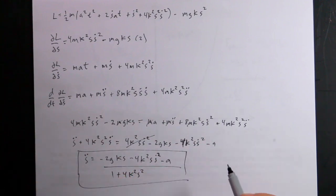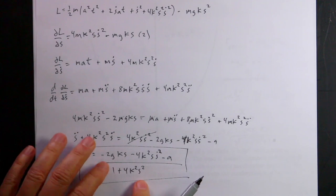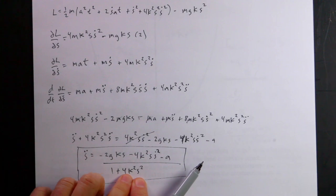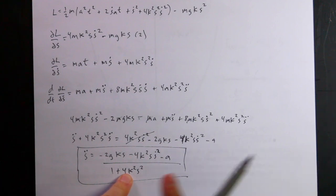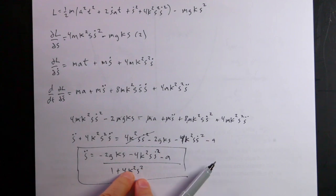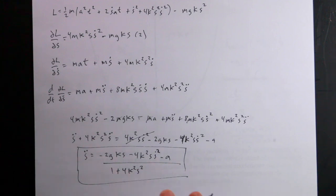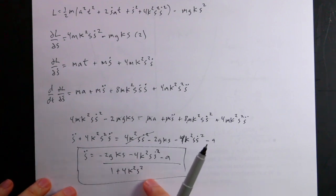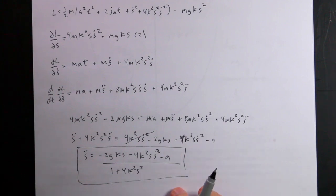I'm checking my work since I made a mistake before. I'm a bit concerned when I see '1 plus a term' in the denominator, but the units work out: k has units of 1/meter because y = kx² means [k] = m/m² = 1/m, so 4k²s² is dimensionless. There's the equation of motion for s̈. It's possible there's an analytical solution, but I'm going to solve this numerically in Python.